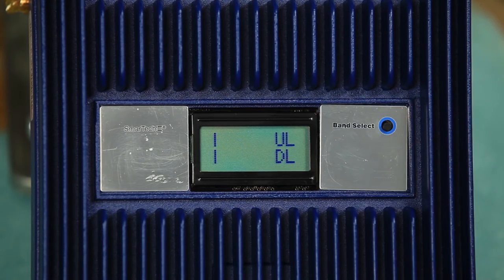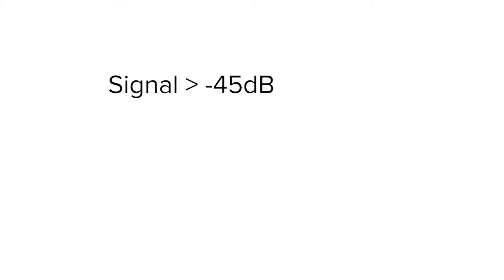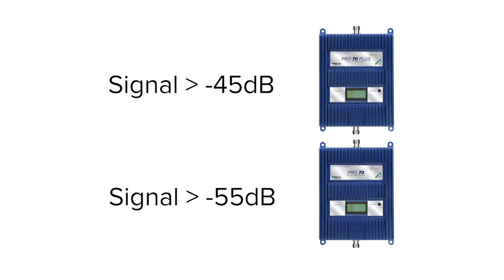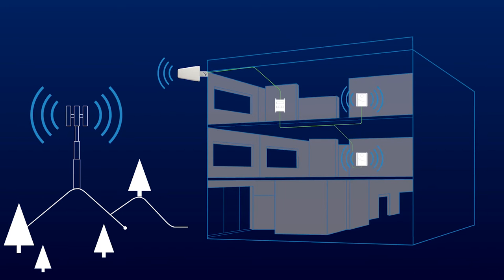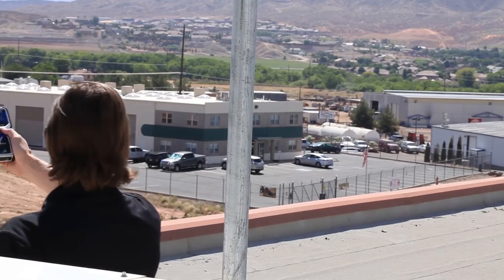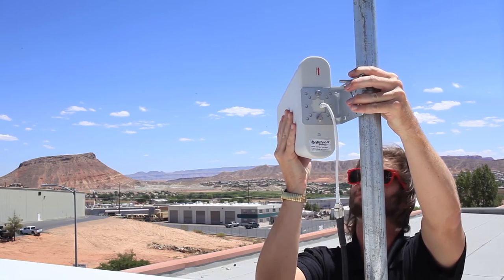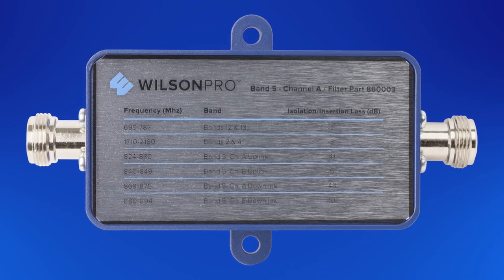Here are some good guidelines for signal strength levels coming into the booster. Anything stronger than -45 dB for a Pro 70+, or -55 dB for a Pro 70, is too strong. This much signal coming into the booster will cause the spectrum to shut down on the amplifier. Keep in mind there are multiple bands or channels within each frequency spectrum — even if just one band is overloading, the whole spectrum will shut down. To solve this, you can find a location on the roof with less signal, use a directional antenna aimed away from the cell tower, experiment with shielding the antenna, or use filters.